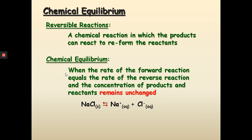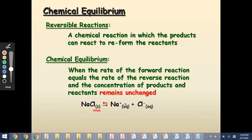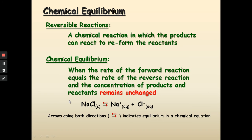Let's use an equation we learned in the last chapter. Sodium chloride is table salt. Before putting it into water, it's going to have a solid form. Because sodium chloride is soluble in water, once it's put into water, it is going to break down into the sodium ion and chloride ion. The arrows going both directions here indicate equilibrium in a chemical equation, and this double arrow represents that the chemical reaction is reversible.